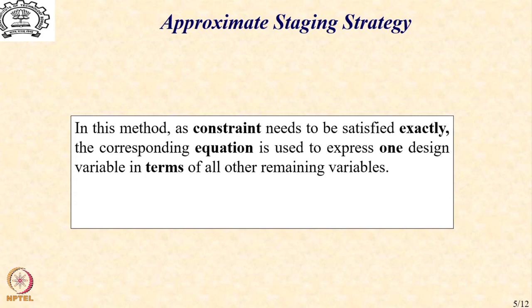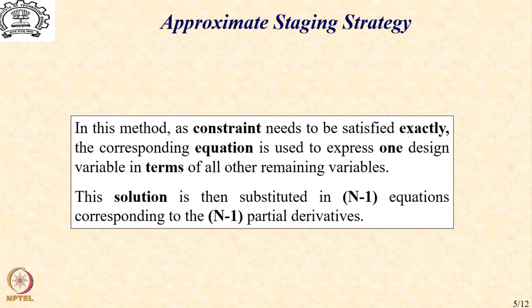And this gives us another benefit that the constraint equation can be used to substitute one design variable as a function of the remaining n minus 1 design variables. The benefit that this gives is that the remaining partial derivatives are only n minus 1. So, effectively, we need to evaluate only n minus 1 partial derivatives and not n partial derivatives.